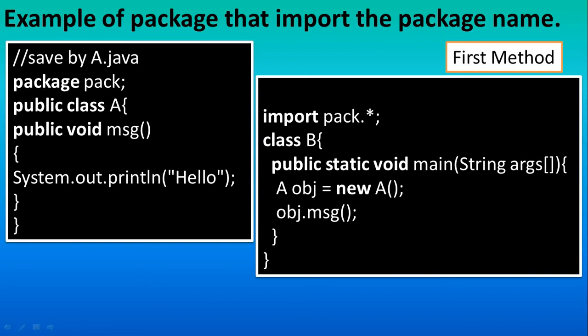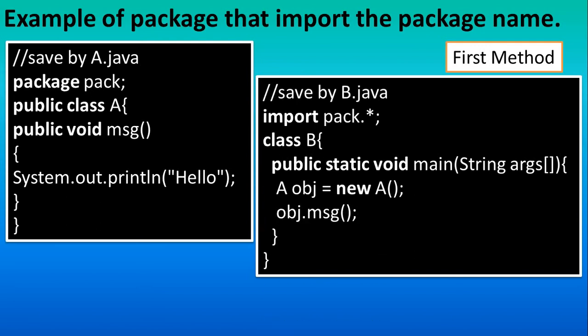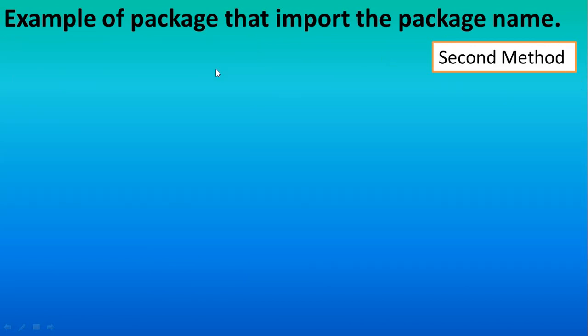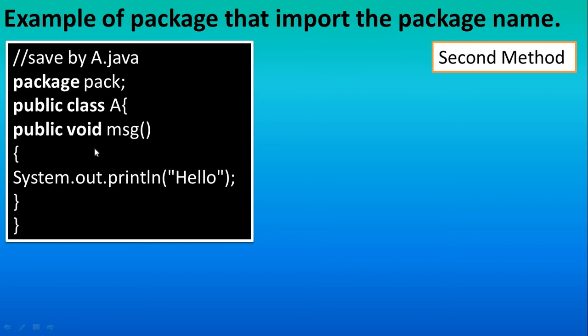We will see how you can run this program through command prompt and through Eclipse in the coming tutorial. You have to save this program as b.java. Now let's look at the second method — the coding for a.java remains the same, only the way of accessing is different.